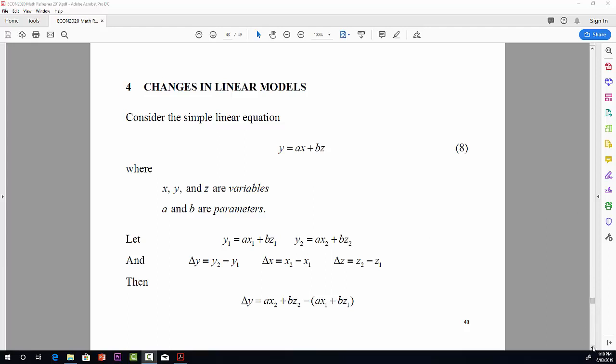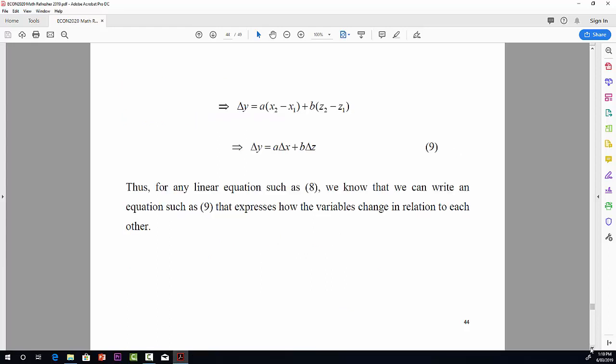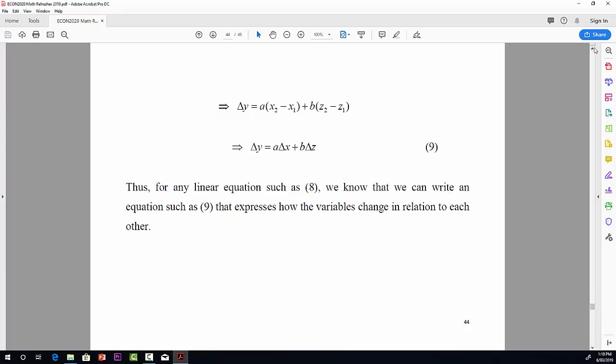Now, I'm going to define a little bit of notation here. Let delta y be defined as y2 minus y1, and let delta x be x2 minus x1, and delta z, z2 minus z1. So delta y is a change in y going from y1 to y2, and similarly for change in x and change in z.